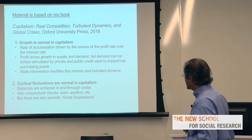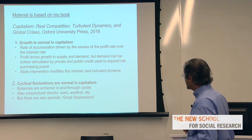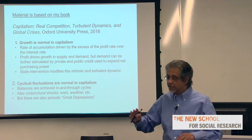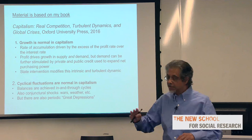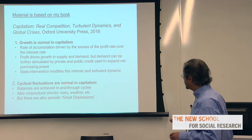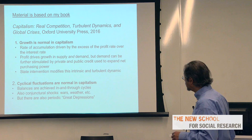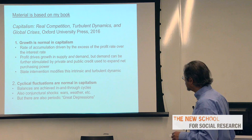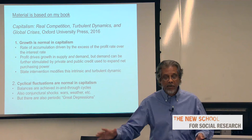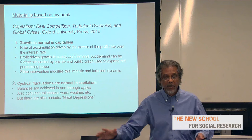The second thing is that cyclical fluctuations are normal in capitalism. Balances are achieved in and through cycles. When we talk about growth, we don't mean steady-state paths or turnpikes — those are fictions, useful analytically but unrelated to the actual process. What you get is a growth rate with cycles. On top of that you have conjunctural shocks — wars, weather — which are local and depend on historical conditions. You also have periodic rebalancing of the system, because it proceeds by overshooting and undershooting, some of which are short and others large.